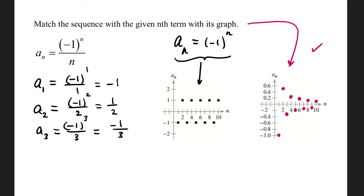a sub 2, negative 1 squared over 2, that's positive 1 half. a sub 3, negative 1 cubed over 3, that's negative 1 third. So you can tell our values alternate in sign, which both of these graphs had alternating signs, positive and negative. But the first graph would be appropriate if we only had the sign alternator negative 1 to the n. When we started dividing by n, our values started getting closer and closer to 0.